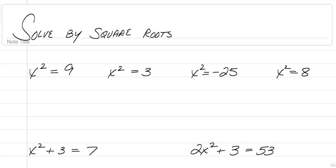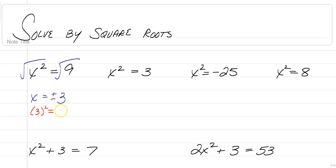When you are taking the square root of x squared, what you're going to do is take half of the exponent. We're going to square root both sides here to get x squared to become just x. And that's going to equal the square root of 9, which we know is 3. But it's actually plus or minus 3. When you are solving, you have to remember to include a plus or minus when you take a square root.